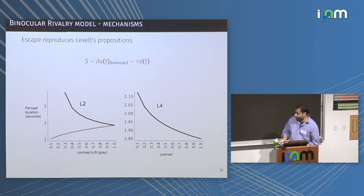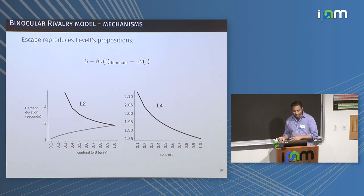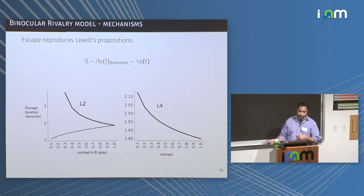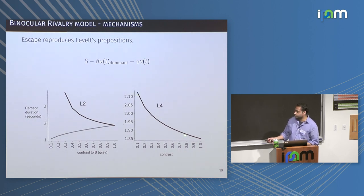For Levelt's fourth proposition, you're changing the drive to both suppressed populations simultaneously, which consistently gives you this monotonically decreasing function. The model naturally captures this. This stuff was understood and discovered before I actually started working with the system.